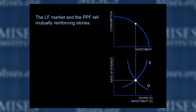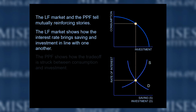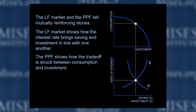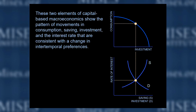The loanable funds market and the PPF tell mutually reinforcing stories. The loanable funds market shows how the interest rate brings saving and investment into line with one another. The PPF shows how the trade-off is struck between consumption and investment. Market adjustments in output, prices, wages, and other inputs keep the economy functioning on the PPF. These two elements of capital-based macroeconomics show the pattern of movements in consumption, saving, investment, and the interest rate consistent with a change in intertemporal preferences.